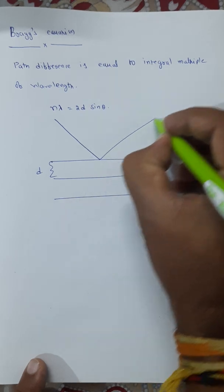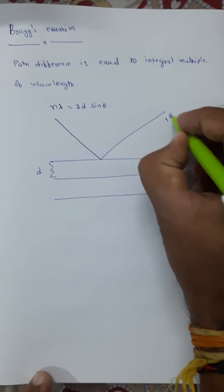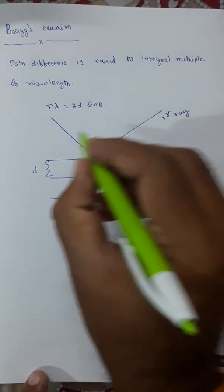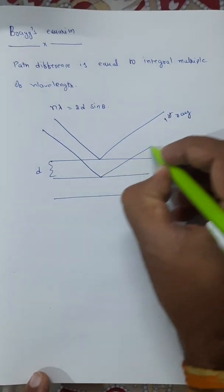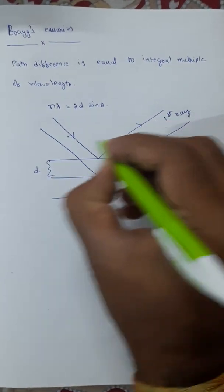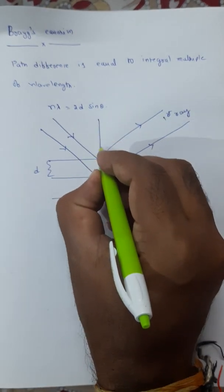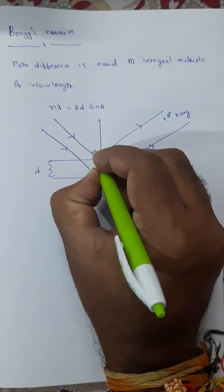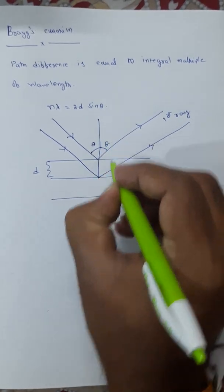Let us consider the first ray incident on the first plane and reflected back as the first ray. Let us assume that the second ray had incident on the second plane and reflected back.